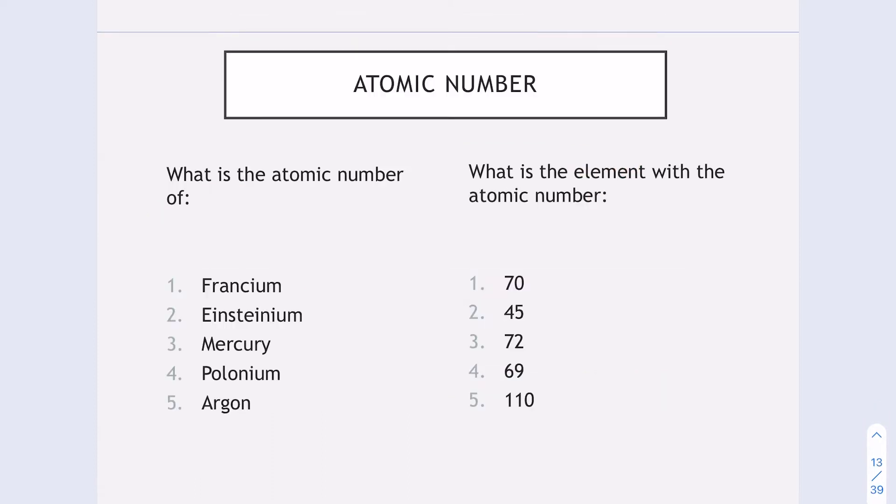The data book is something you'll get in any test or exam, so you don't need to memorize the atomic number. For example, if we take argon, argon has an atomic number of 18. On the other side, let's take 45 for example. 45 is rhodium. I've just used my data book to find these. Feel free to pause and try some other ones yourself.